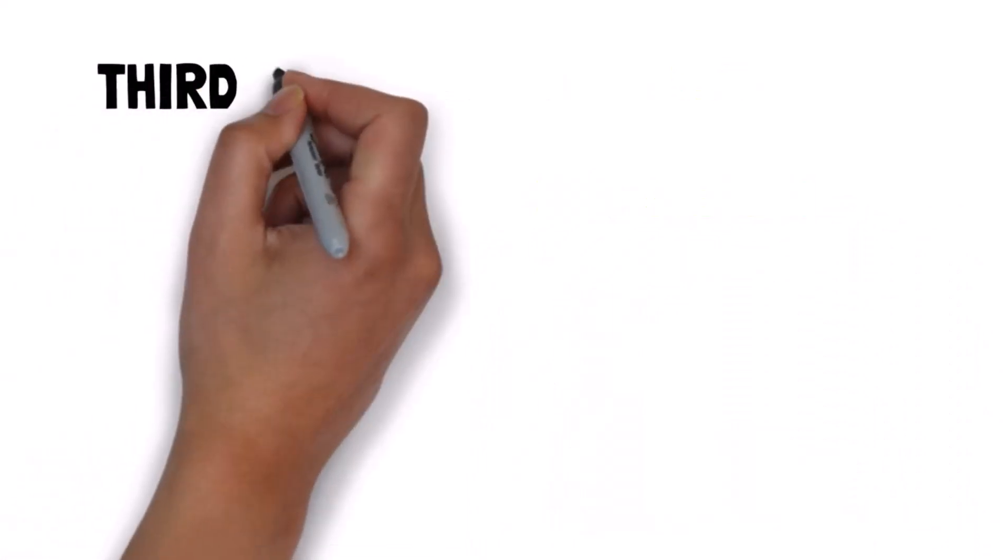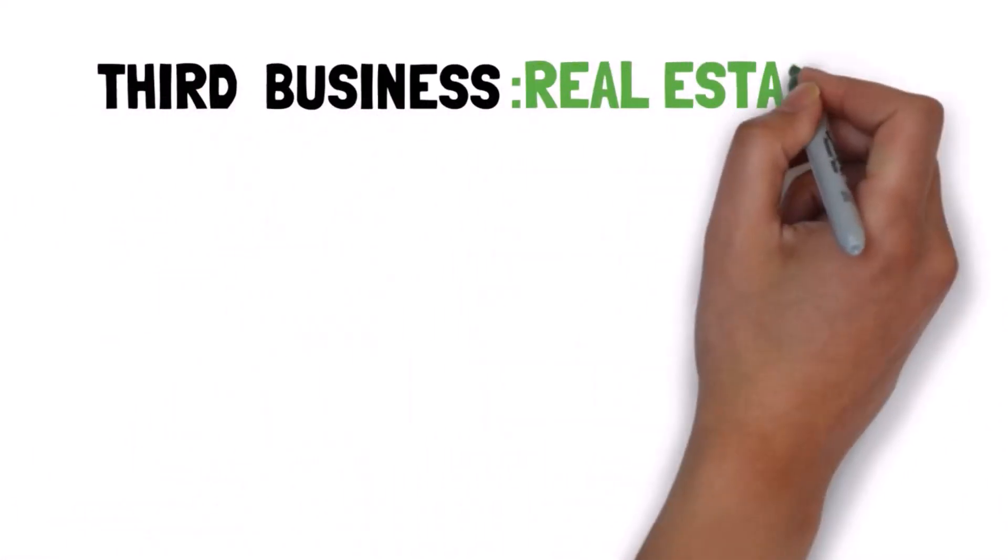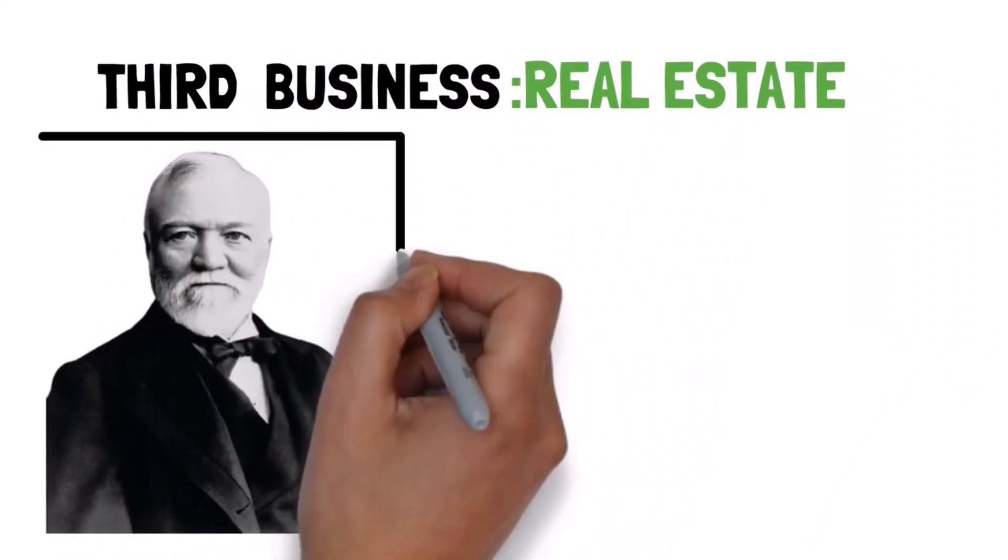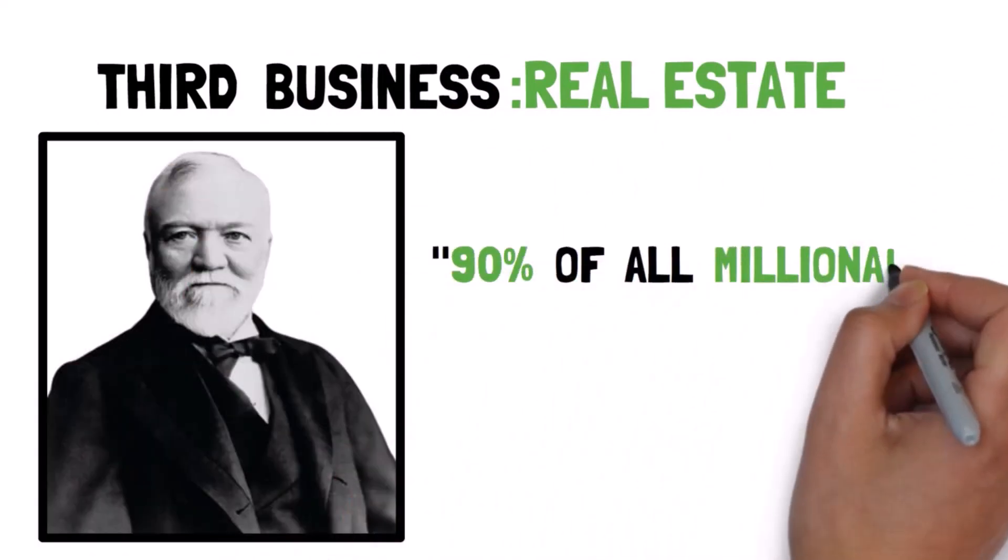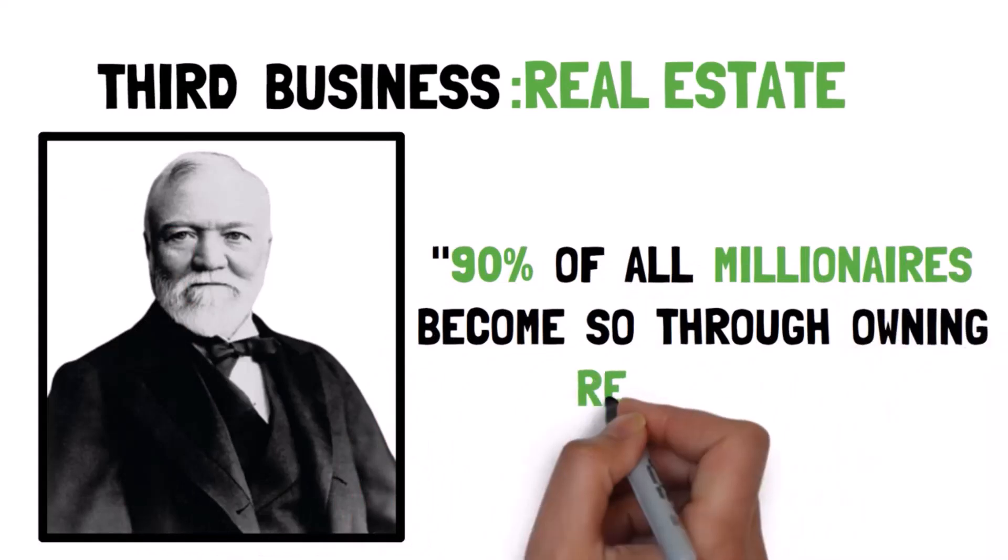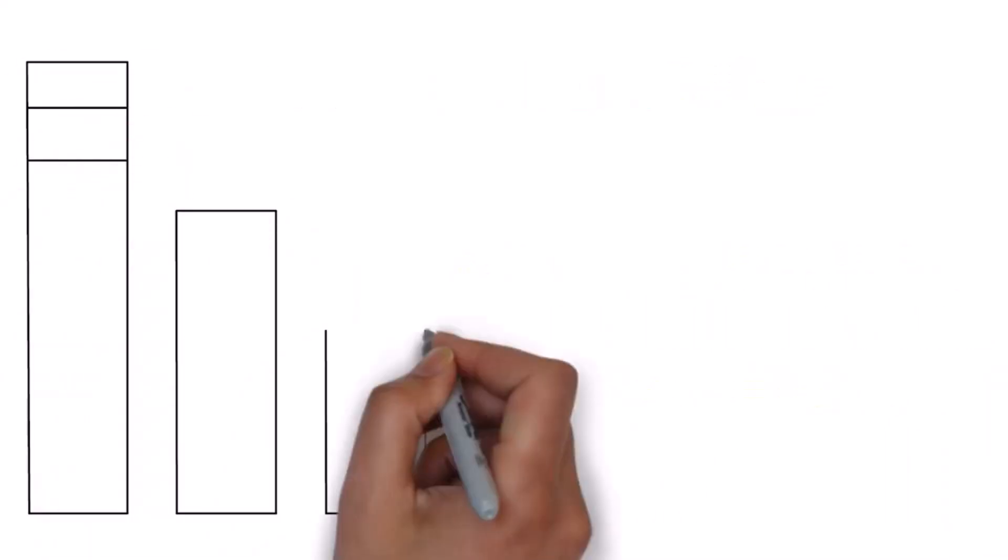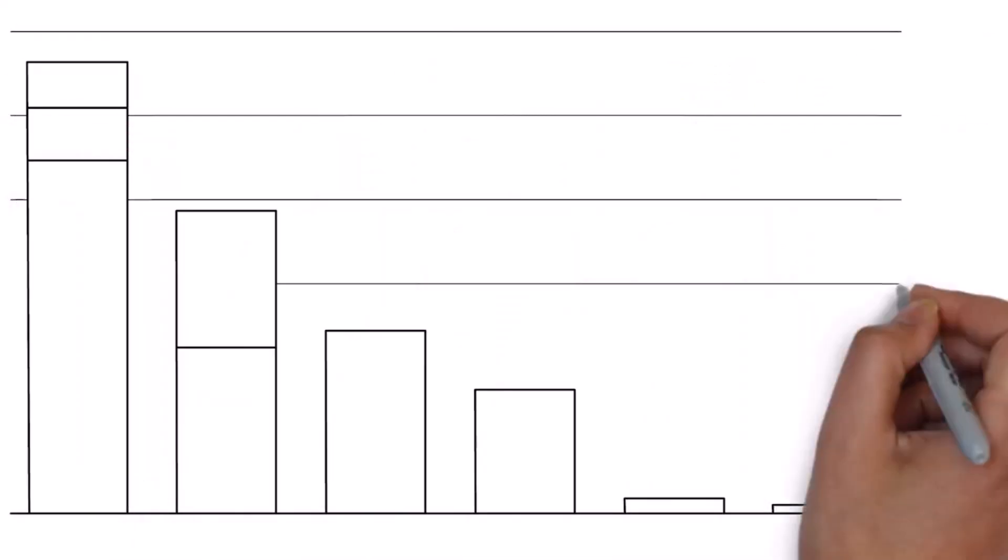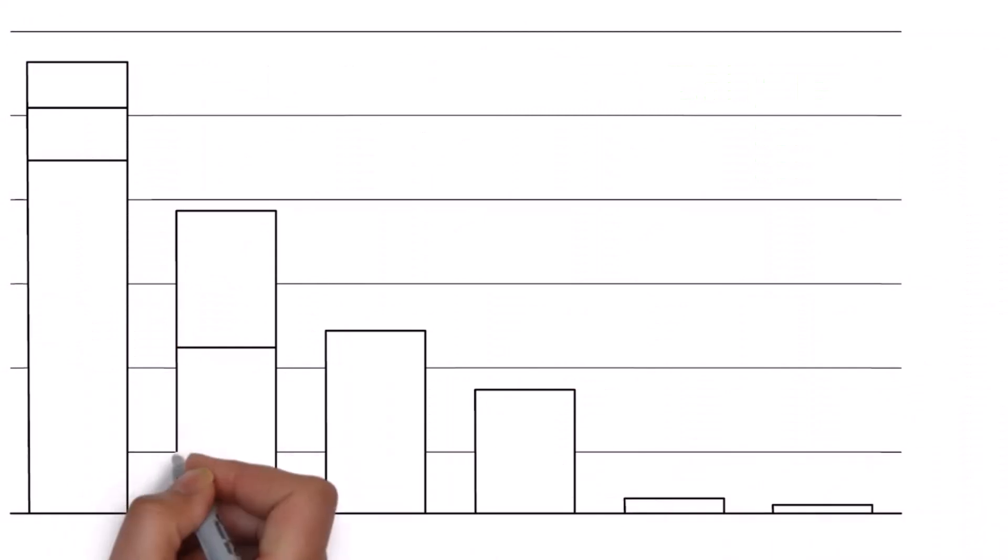Now, let's look at the third business, real estate. Andrew Carnegie is famously quoted as saying, 90% of all millionaires become so through owning real estate. Did you know that more money has been made in real estate than in all industrial investments combined?